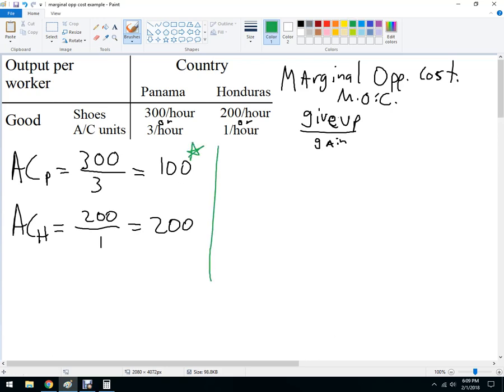So whoever has a lower number should do it, and that is Panama. So Panama has comparative advantage when it comes to producing the AC units. Now what about shoes? So shoes in Panama is going to be three AC units over 300 shoes is what we gain. So this is one over 100.